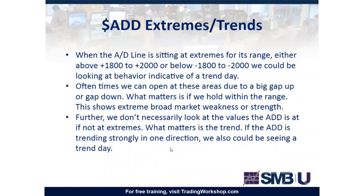The other aspect of the ADD is ADD extremes or trends. These are mostly used not for gauging fade opportunities — trading against the short-term trend — but to get involved for a much more powerful overall market trend. Divergences are used to get involved for a new developing trend, while ADD extremes and trends help us stay involved for a much bigger trend that could last the entire day. We look for the AD line sitting at extremes: above 1,800 to 2,000 or below negative 1,800 to negative 2,000. As long as we're balancing within that area, the trend is very likely to continue. If 2,000 stocks are advancing, almost every stock is green and they're just going to keep buying.